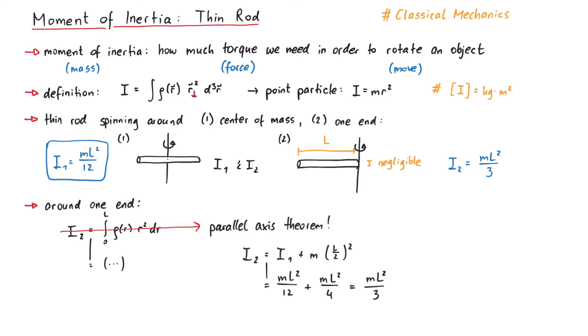Finally, we can see that i1 is smaller than i2, so we would need more torque to rotate the rod around its end compared to an equivalent rotation around its center of mass.